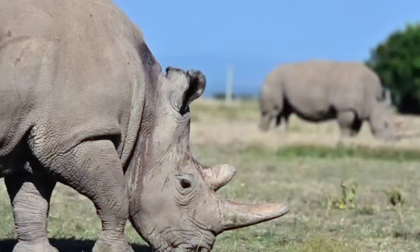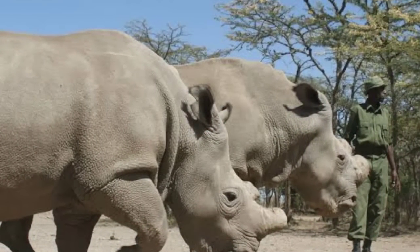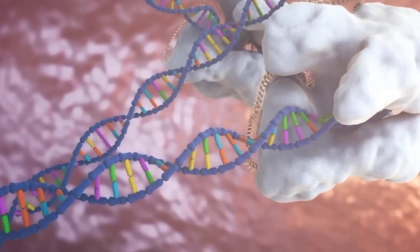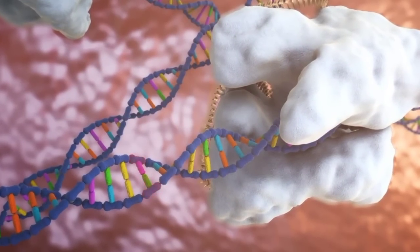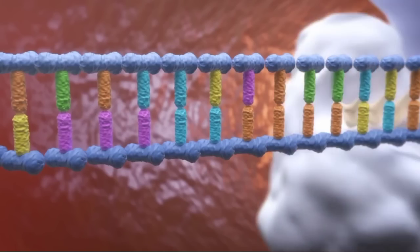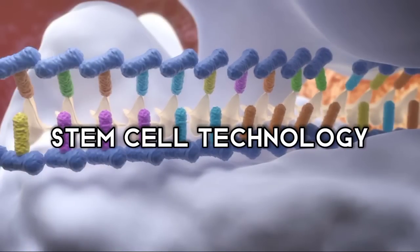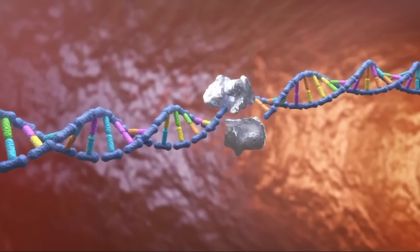The northern white rhino. With only two females left on Earth, this subspecies is functionally extinct. But CRISPR might hold the key to their resurrection. Scientists are working on using CRISPR, combined with techniques like in vitro fertilization and stem cell technology, to bring these magnificent creatures back from their end.